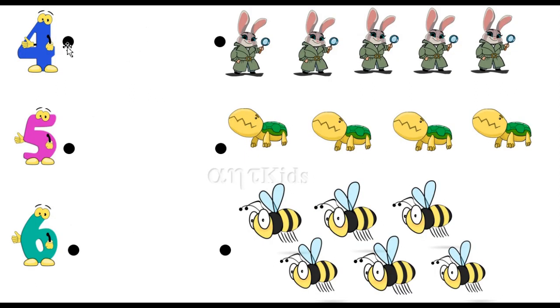Next, this is number 4, here we check it out. 1, 2, 3, 4, 5. 5 bunnies there, next we check here, 1, 2, 3, 4. 4 tortoises are there, so number 4 is matched with 4 tortoises.